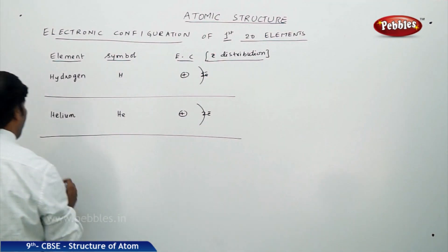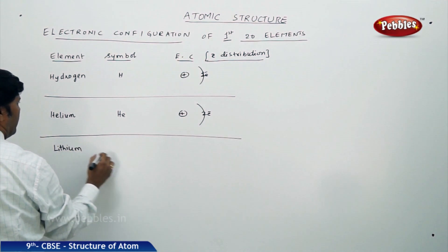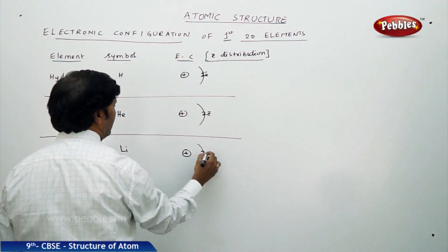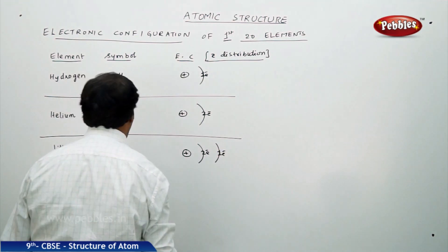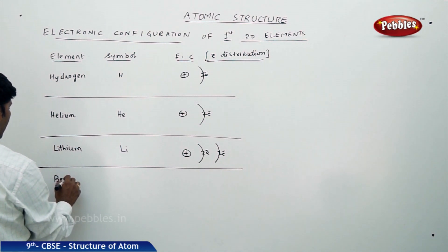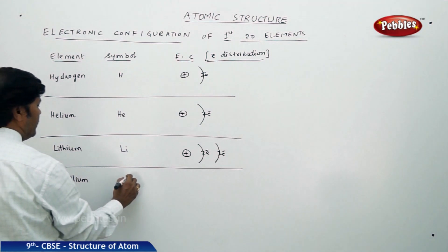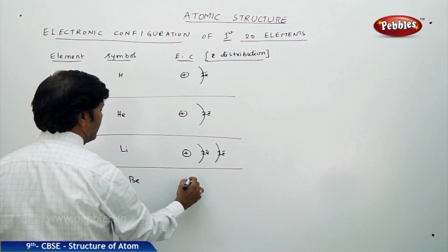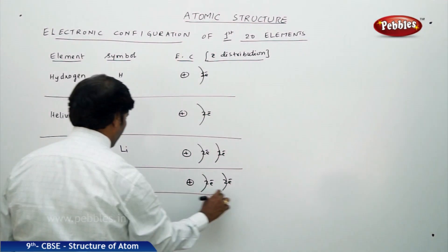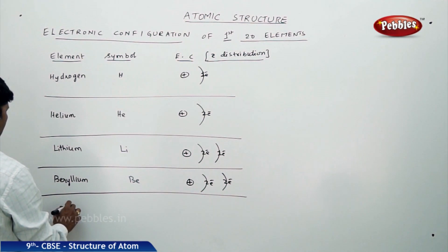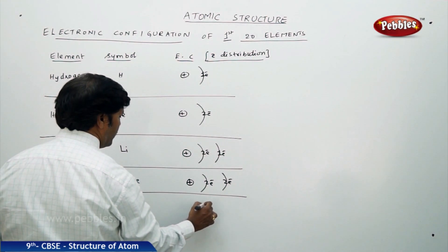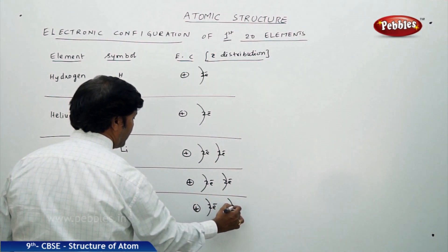Lithium, symbol Li: nucleus, first shell 2 electrons, second shell 1 electron. Beryllium, symbol Be: nucleus, first shell 2 electrons, second shell 2 electrons. Boron, symbol B: nucleus, first shell 2 electrons, second shell 3 electrons.